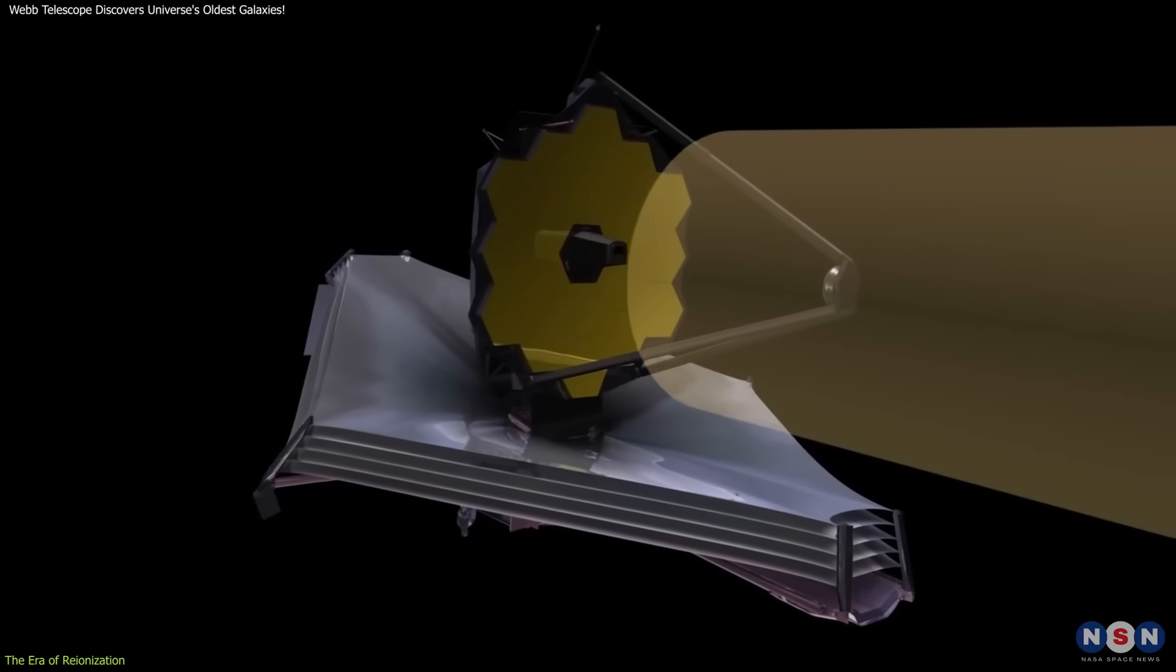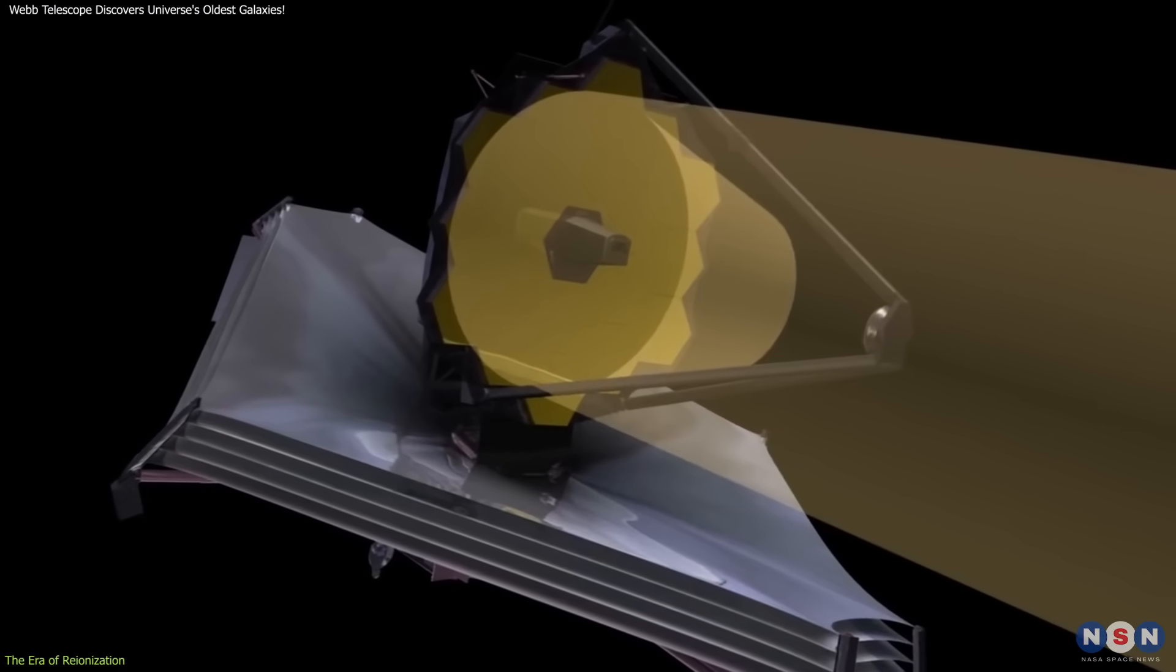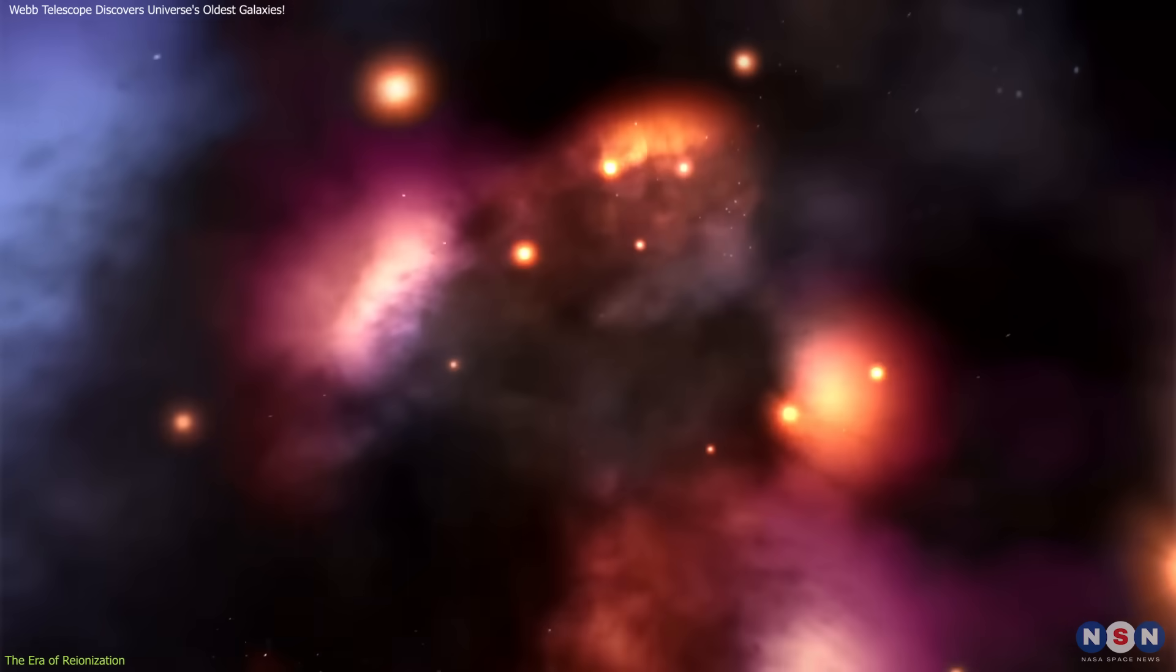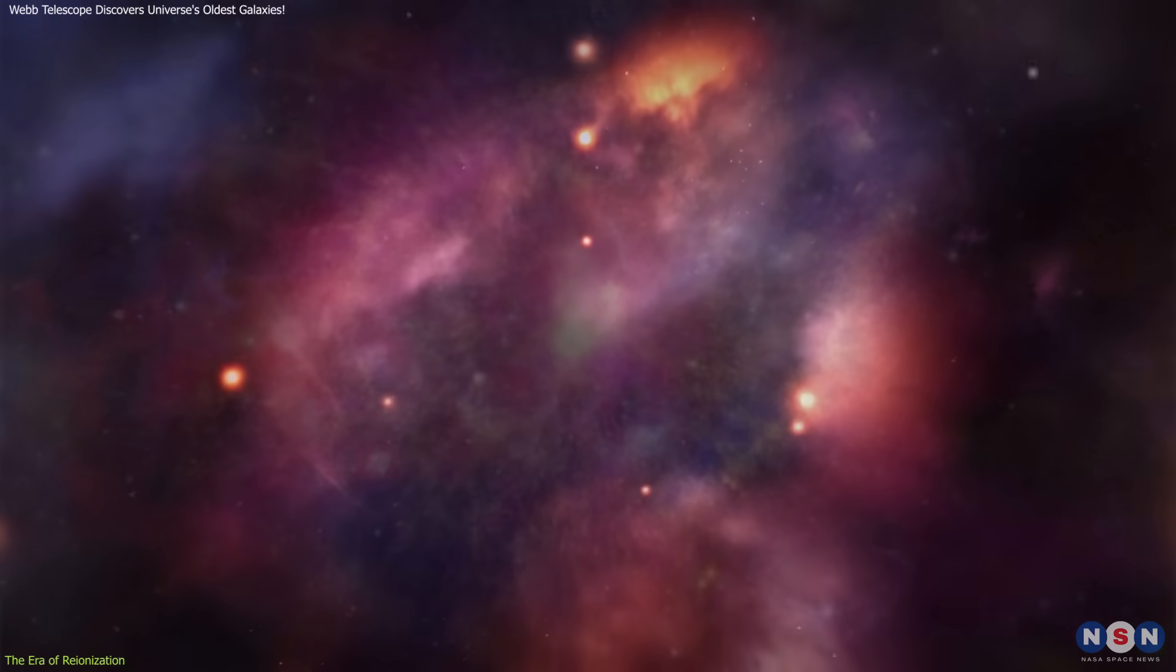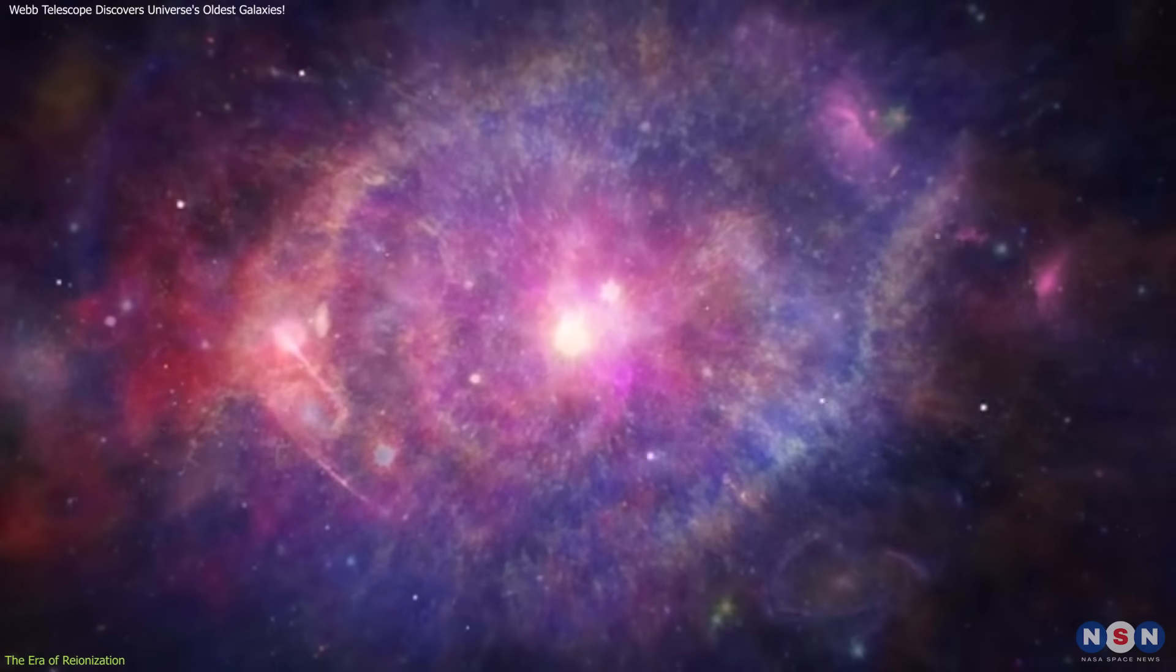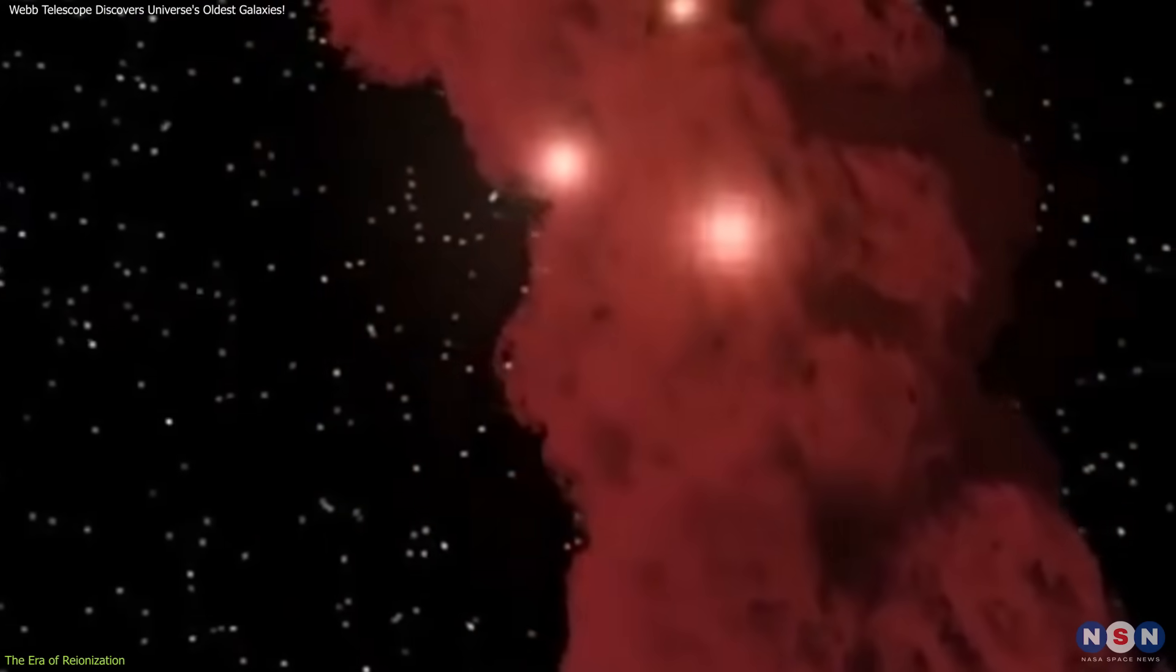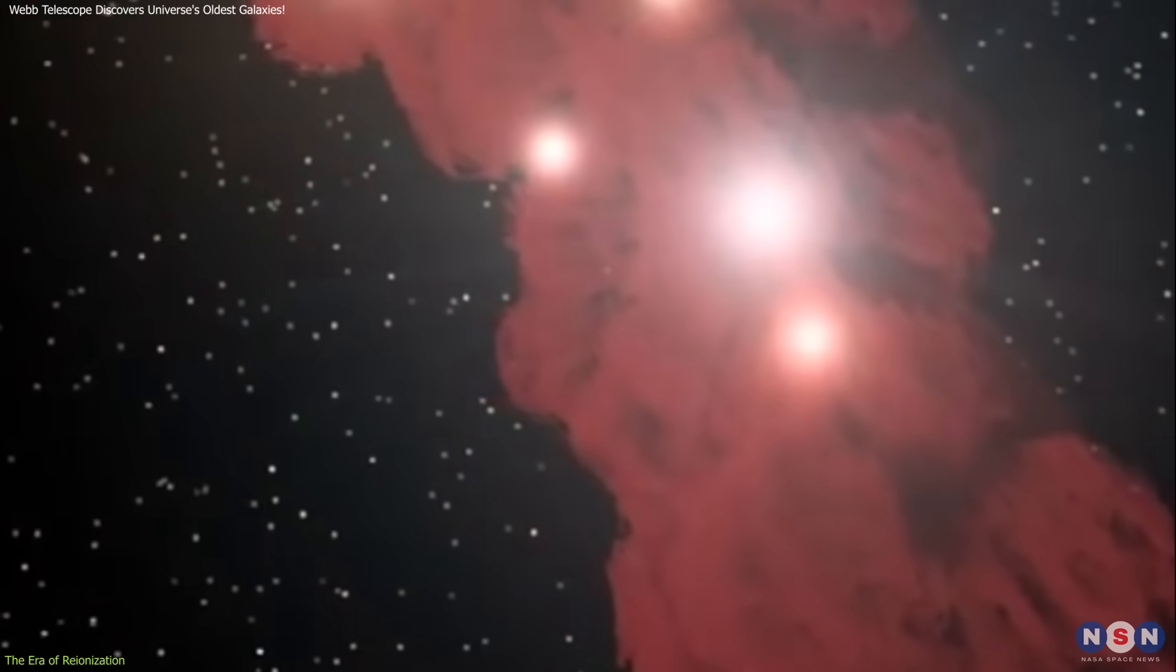The detected galaxies were actively forming stars, as indicated by the absorption of radiation by neutral hydrogen gas. This absorption is a key indicator of star formation.